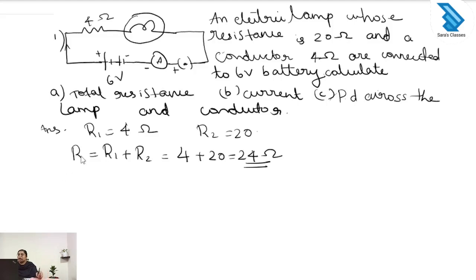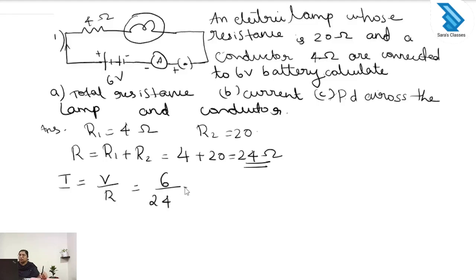Next we have to find the current. I is equal to V divided by R. The voltage is given as 6 volt and the total resistance is 24 ohm, so it is 6 by 24, which is 1 by 4, giving 0.25 ampere.